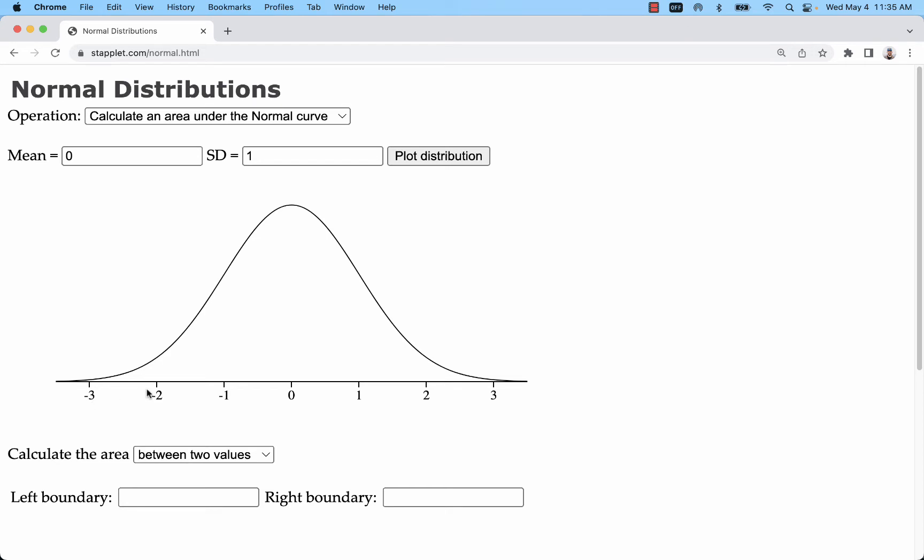z is a standardized variable where it just measures the number of standard deviations above or below the mean. So we put the mean here in the middle at 0, and we're going 1, 2, 3 standard deviations above it, 1, 2, 3 below it.